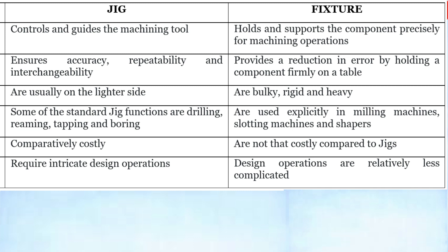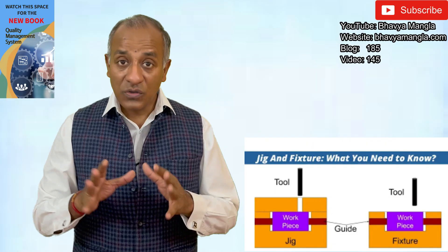In general, jigs are more expensive, whereas fixtures are generally not very expensive — though in some cases they could be. Moreover, jigs require a lot of intricate design work, whereas fixture designs are generally less complicated.